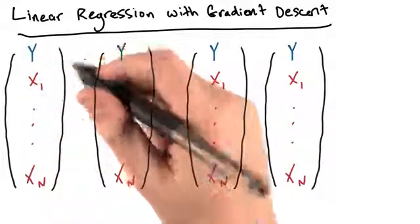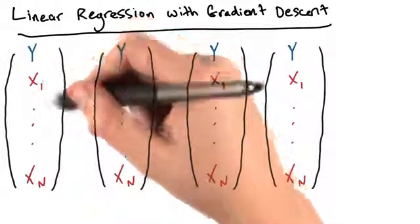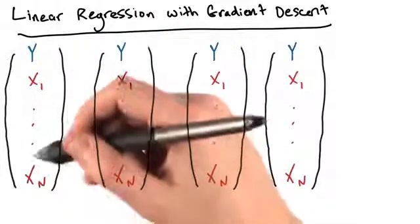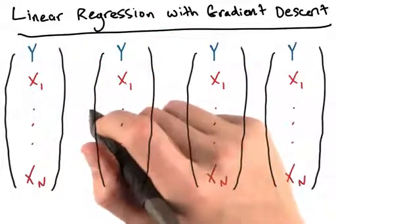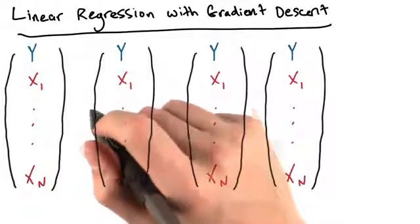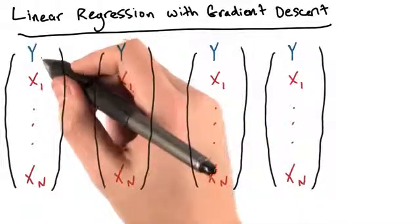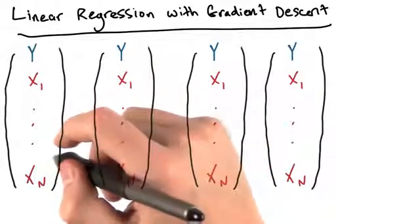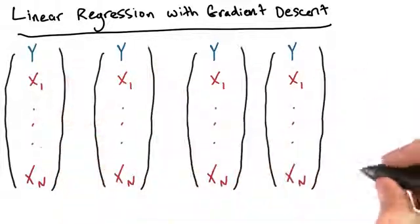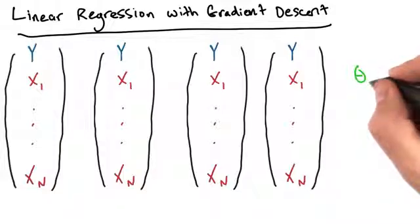So in our baseball example, y here is lifetime number of home runs, and our x1 through xn are things like their height and weight. Generally speaking, we're trying to build a model that predicts values of the output variable for each data point by multiplying the input variables by some set of coefficients that we're going to call theta 1 through theta n.